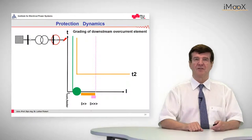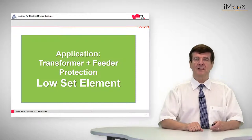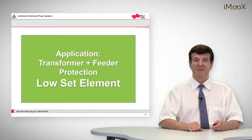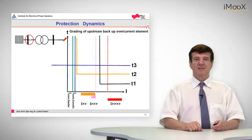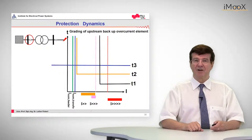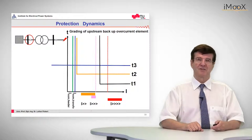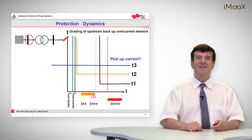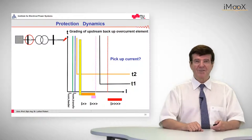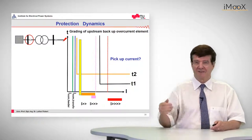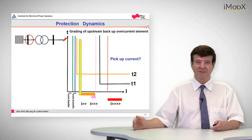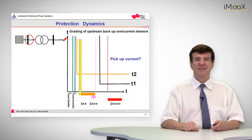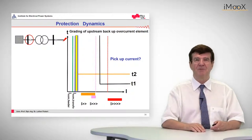This is the setting of the feeder protection downstream. We can also use an additional function of the upstream overcurrent protection as a backup protection — it should pick up if the feeder protection does not trip the fault. The tripping time is clear: it must be above the tripping time of the feeder, and this new tripping time is called T3. As for the pickup current, it should always pick up for the worst backup case, which is the short circuit at the far end of the longest feeder, so it must be set below that value. On the other hand, it should be above the maximum nominal current of the transformer in order not to impede normal operation.